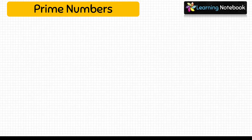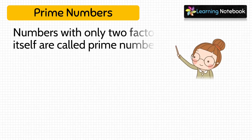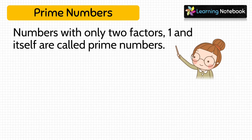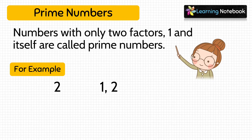Now let's see what are prime numbers. Numbers with only two factors — 1 and itself — are called prime numbers. For example, 2 has only two factors: 1 and the number 2 itself. Therefore 2 is a prime number.